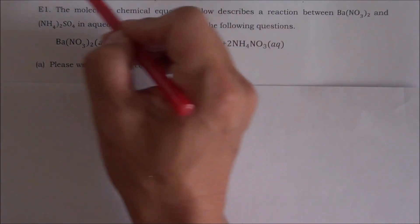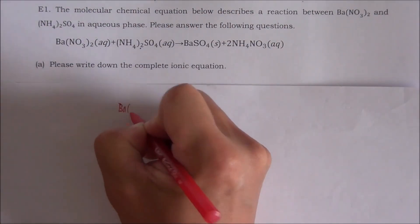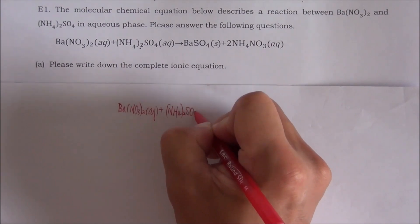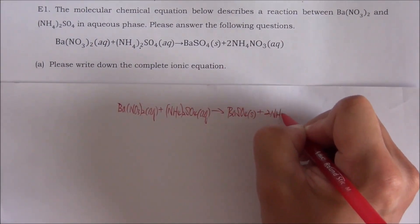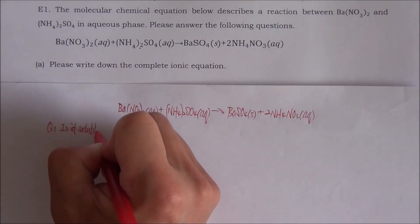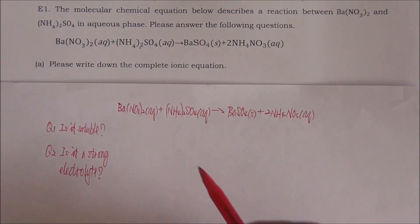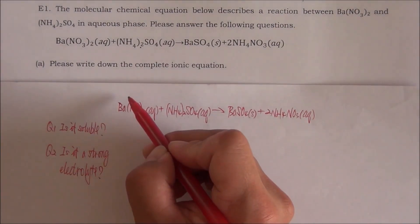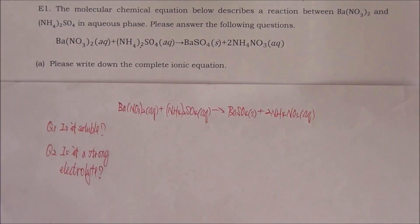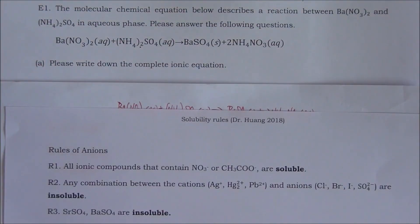Let's start from the molecular chemical equation. Now let's try to answer the two questions for every chemical. The first chemical is barium nitrate. Let's look at the solubility rules. You have to remember all these rules — during an exam or a quiz, you will not be given these rules. You have to remember all of them. There are a total of seven rules.